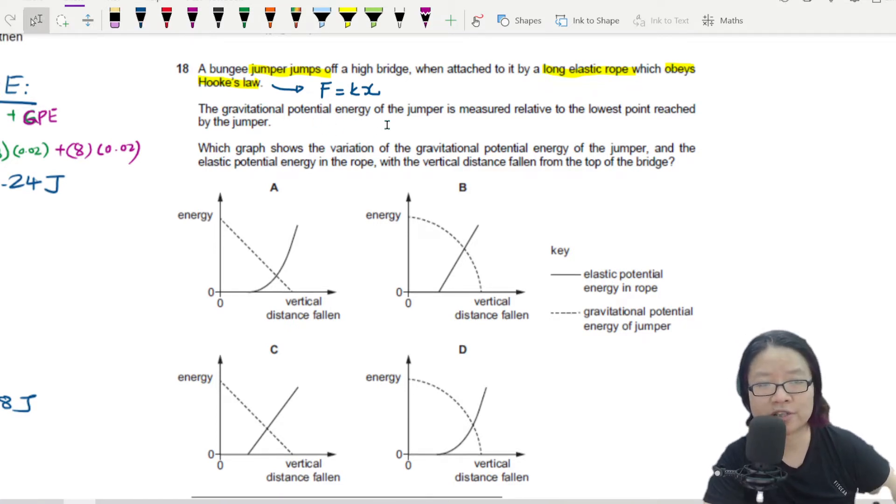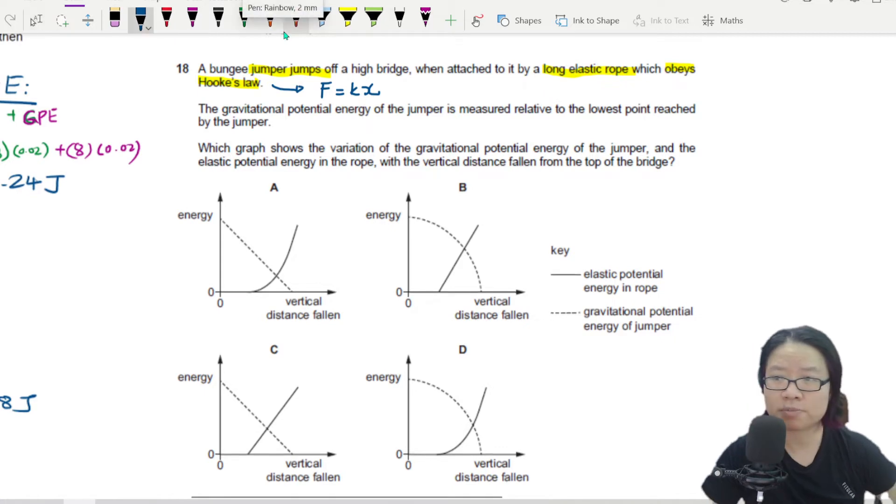Gravitational potential energy of the jumper is measured relative to the lowest point reached by the jumper. So maybe a drawing would help. So let's say this is your high bridge.